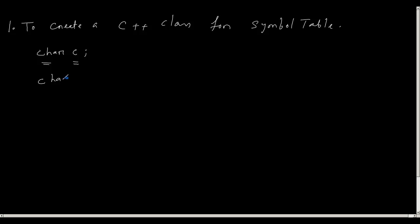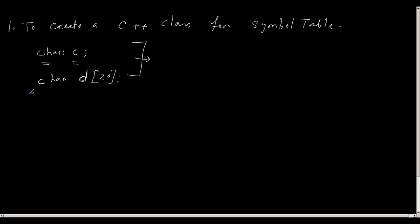It can be 'char C[20]', so it can be a string vector, or an array of characters. You can decorate the parse tree with the information that a given variable is an array of characters. In this way you can do various kinds of information population. As a small exercise, create a C++ class for the symbol table and also populate all the members and the respective functions.